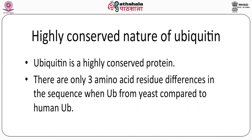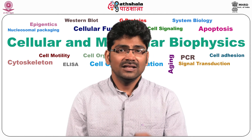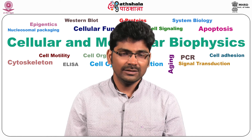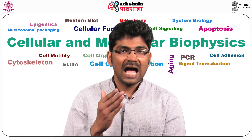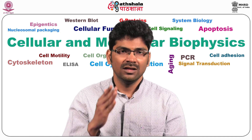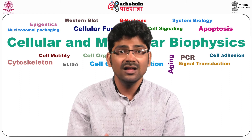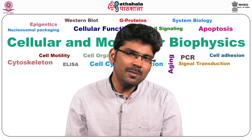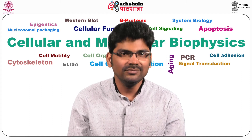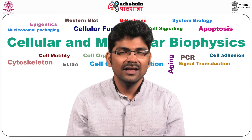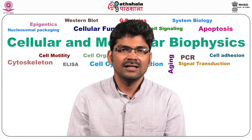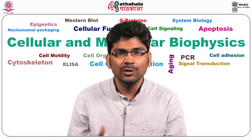Ubiquitin is a highly conserved protein. There are only three amino acid residue differences between yeast and human Ubiquitin. This sequence conservation suggests that the vast majority of amino acids in Ubiquitin are essential, and any mutations that occurred over evolutionary history have been removed by natural selection. Another example of a highly conserved protein is cytochrome C, a mobile carrier in the electron transport chain.